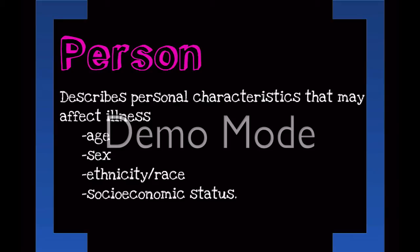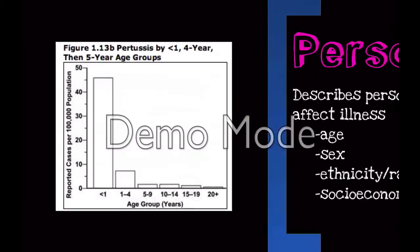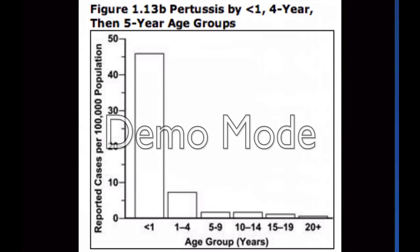In descriptive epidemiology, the next part is describing personal characteristics that might affect illness. We look at everyone who has our health-related event and look for characteristics such as age, sex, ethnicity or race, and socioeconomic status. Each of these characteristics may play into a different reason why the person is experiencing the health-related effect. For example, in pertussis, this is a disease that affects young infants — children who are less than 1 year old. This is important because if we are looking at how to control the disease, we know that the lifestyle of a 6-month-old is much different than someone who is 20 years old.